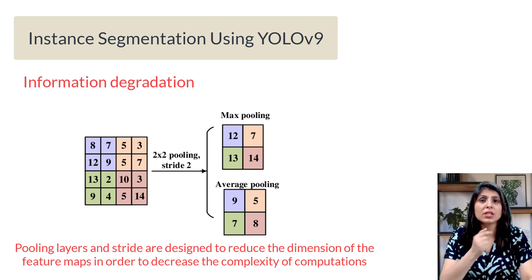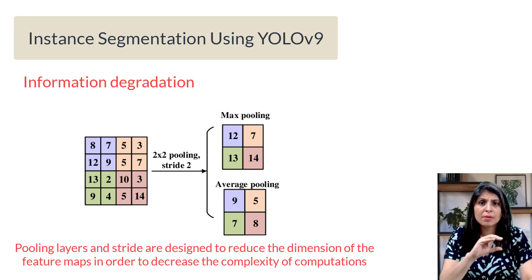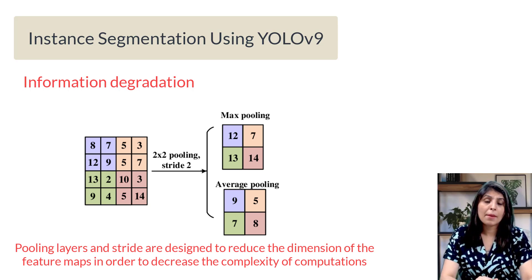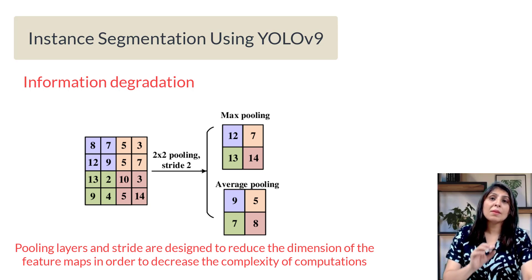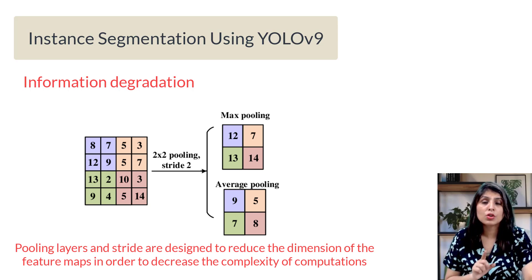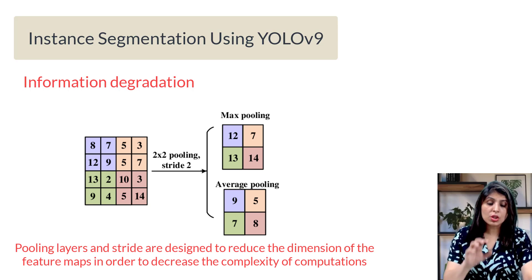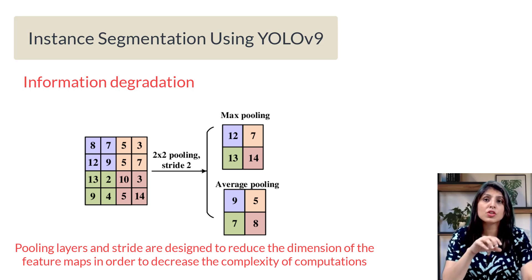Spatial information degradation means losing some of the small details in the picture when we make it smaller. In YOLO models we shrink the image to make it easier for the computer to understand, but when we do this we lose some of the fine details. This can make it harder for the model to accurately detect objects or to put a mask on them, especially when the objects are smaller. This issue of information loss is the main problem that YOLOv9 addresses.